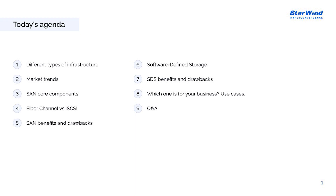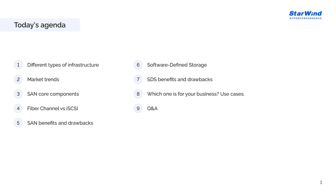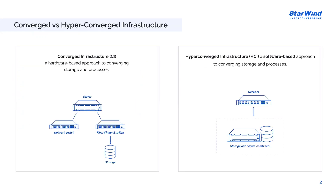SAN, which stands for Storage Area Network, and SDS, or Software Defined Storage, are both integral parts of modern data storage solutions. SAN is a dedicated network that allows multiple servers to access shared storage resources. SDS is a storage architecture that separates the storage management software from the underlying hardware — this abstraction gives you more flexibility by virtualizing control over storage resources. A well-known SDS representative is vSAN.